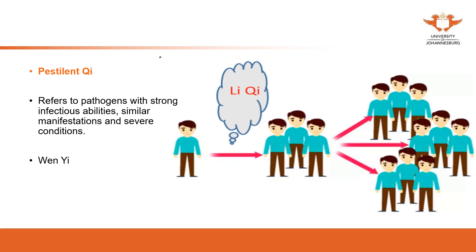The six exogenous pathogens are wind, coldness, dampness, dryness, fire, and summer heat. When we study each of them, each has specific characteristics. That's why we can identify these pathogens. We don't see the pathogens directly, but from these characteristics we can determine which specific pathogen a patient has been attacked by.